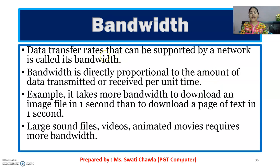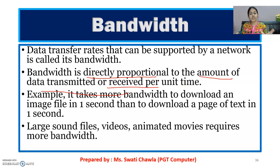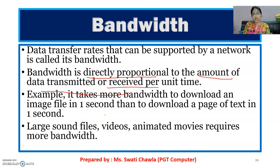Now our next term is bandwidth. You have heard of the bandwidth term — network bandwidth is low, connectivity bandwidth is low — that means the speed is slow. The data transfer rate that can be supported by a network is called its bandwidth. It is directly proportional to the amount of data transmitted or received per unit time. For example, it takes more bandwidth to download an image in one second than to download a page of text in one second. If I am having a text page or an image file, which one will open fast? Obviously my text file, because it requires less bandwidth.